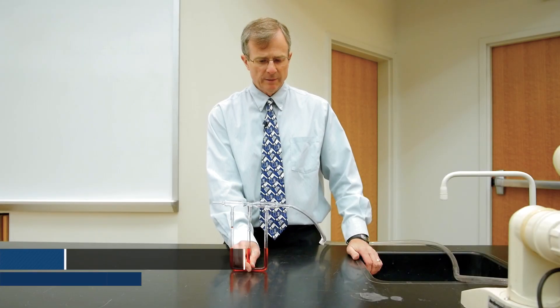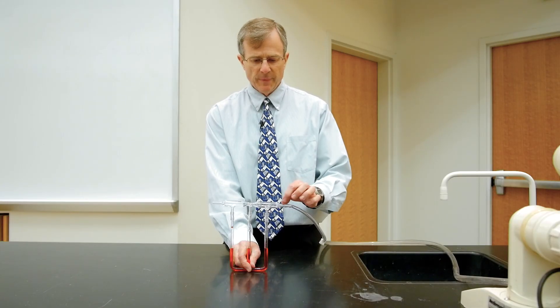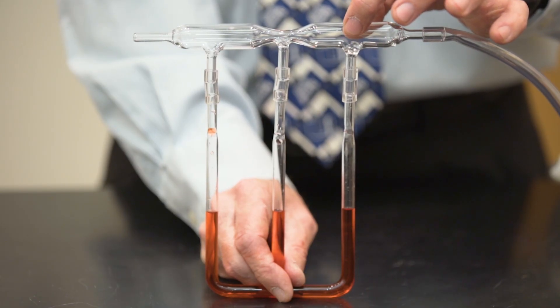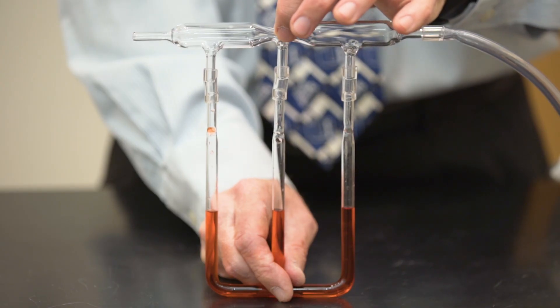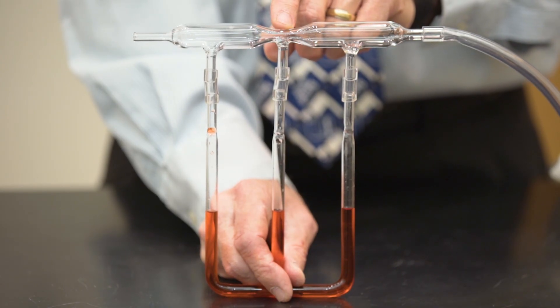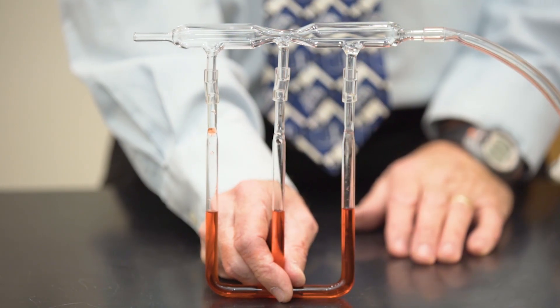This is a Venturi tube. I've got a source of air that will come in to this side of the tube. It will pass through this region where the tube is wide, and then here where the tube is quite narrow, and then back to wide again.